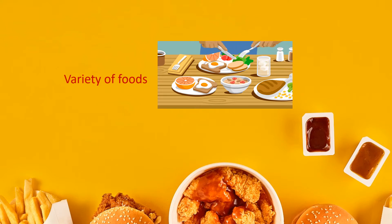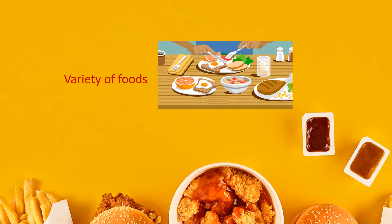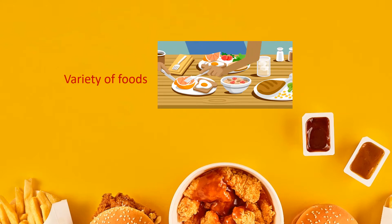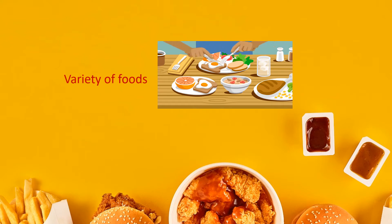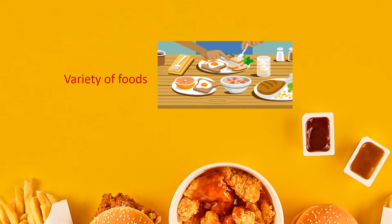Variety of food varies with the time of the day. For example, at breakfast you would like to eat parathas, omelette, bread jam. Then for lunch or dinner, you would like to eat sabzi roti, dal, chawal, chicken, etc.